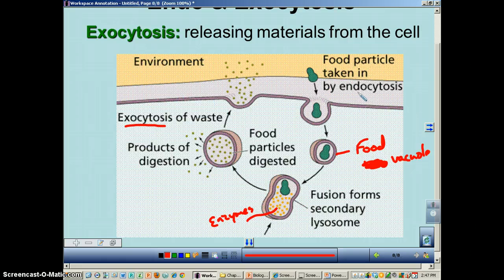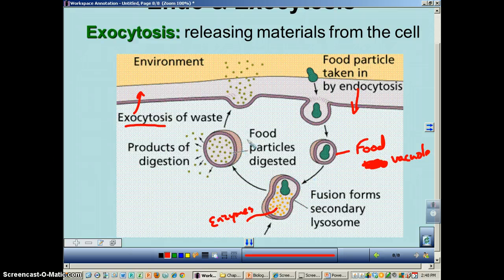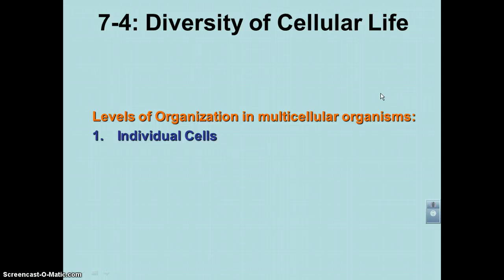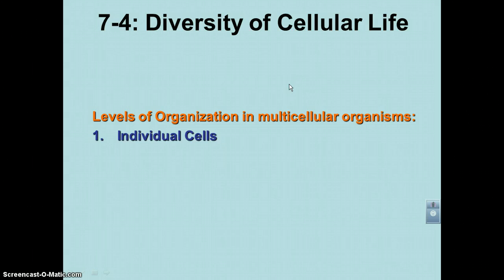Remember: endo means coming in, exo means going out of the cell. Both processes involve the use of membranes and vesicles. As you notice in a cell, these membranes and vesicles are always moving around — they're extremely dynamic. The cell membrane is not a static place; there's always movement and change on it. That will conclude podcast number nine. One more to go in this chapter — podcast number ten. Don't forget to look at every single one of these podcasts as you prepare for your test.